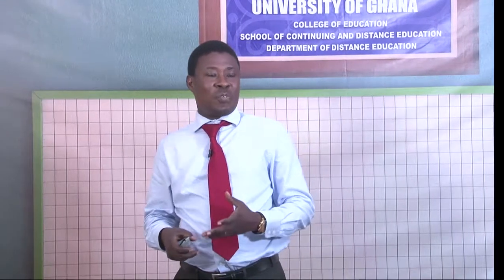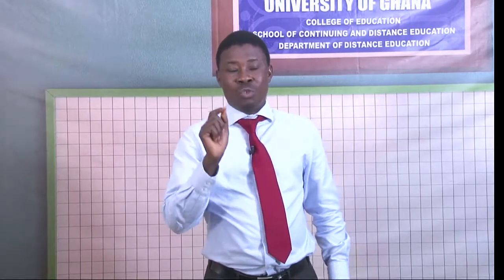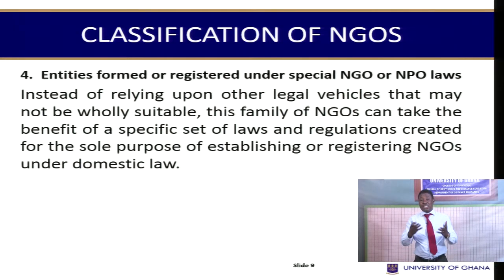We also have what is known as a company not-for-profit, which is where typically the kind of NGOs we have in Ghana fit in — companies established, limited by guarantee, that engage in activities to provide support to communities or people. Then there are entities formed or registered under special laws. In Ghana, if you want to form an NGO, you go to the Registrar General's Department to register before the Department of Social Welfare accepts your application. You register as a company limited by guarantee, meaning the founders have responsibility to service it if there are problems.